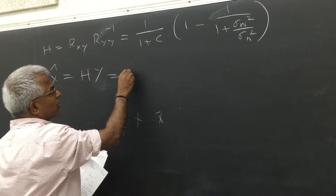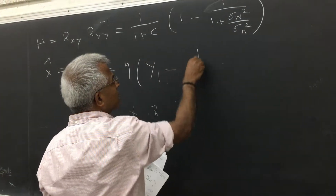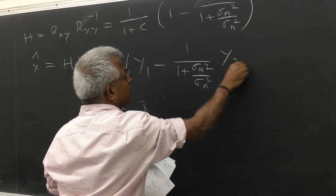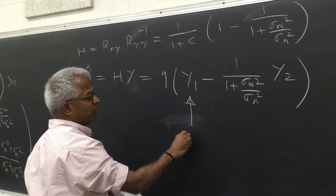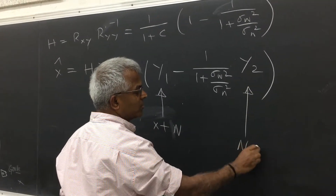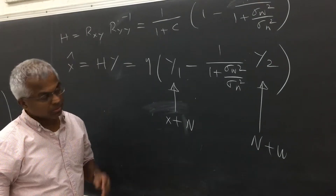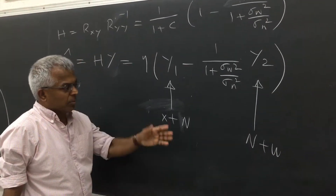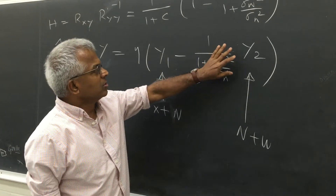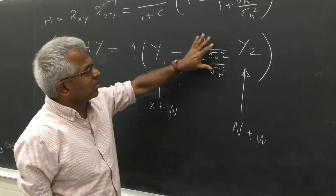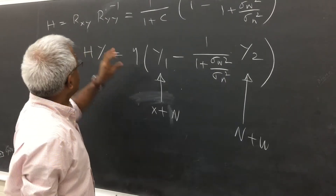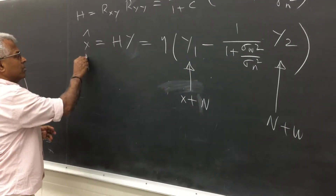The best estimator is h multiplied by y. This turns out to be some constant multiplied by y1 minus another constant multiplied by y2. This makes sense because y1 is the weak signal plus the strong interference, and y2 is the strong interference itself contaminated by another noise. This is adaptive cancellation of the strong signal — the best filter decides how much of the background to subtract from the original data to get the best estimate of the weak signal.